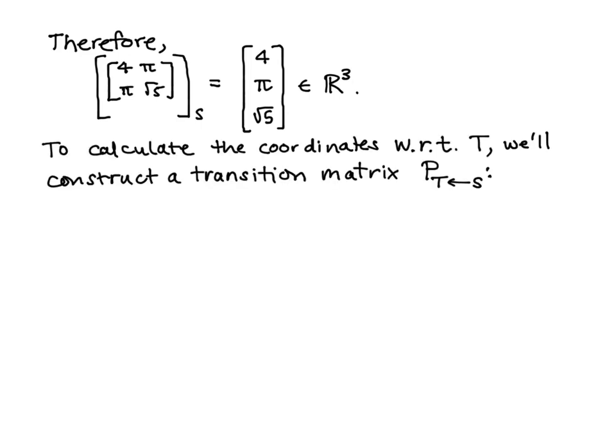If I want to calculate coordinates with respect to the ordered basis T, I could either do it directly, or I could construct a transition matrix from the S basis to the T basis. So I need to find the coordinates of S1, S2, and S3 with respect to the ordered basis T. I'm just calling my ordered basis S elements S1, S2, and S3, and they're those in order.